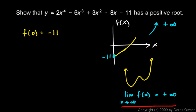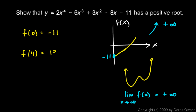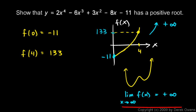If you didn't want to use end behavior, you could calculate a specific x value. Pick a big number — these functions grow really fast. You could calculate f of 4, and if you put in 4 for x and do the arithmetic, f of 4 equals 133. So you could set it up as a standard IVT problem: x goes from 0 to 4, and y values go from negative 11 to 133, passing through 0 along the way. Either approach clinches the argument.